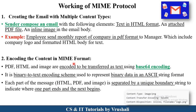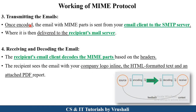MIME protocol also divides the data by type: PDF in one part, images of the particular mail in another part, and text information separately — all stored in their respective parts. After encoding, the third step is transmitting the emails. The MIME protocol sends the encoded mail to the SMTP server.